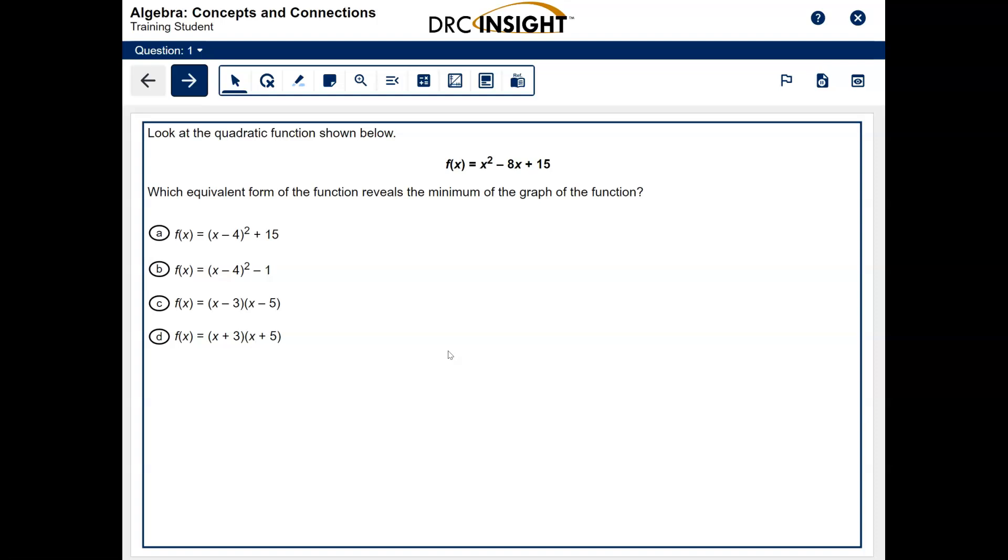We're looking at a quadratic function, and we're looking for an equivalent form that reveals the minimum. So it can't just be equivalent, it needs to also reveal the minimum.